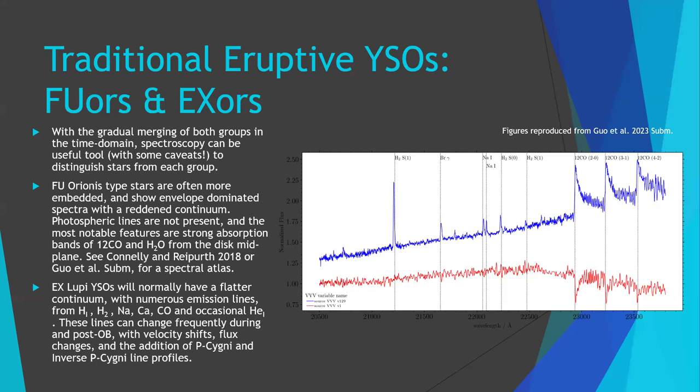Traditionally FUORs have all been detected in optical first, which is more of a selection bias than a scientific reason. They're generally optimal to detect because the optical outburst, once you've cleared these discs, is substantial — meaning you can pick it up nicely in surveys like ZTF or with Gaia Alerts.